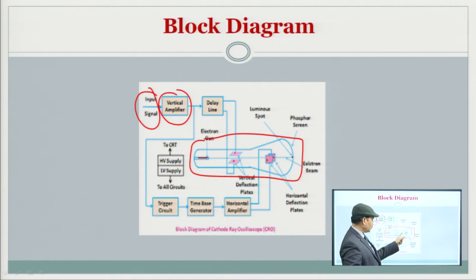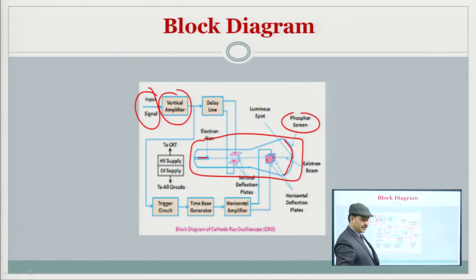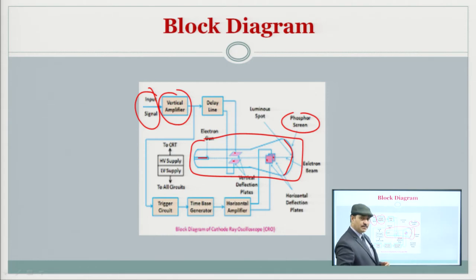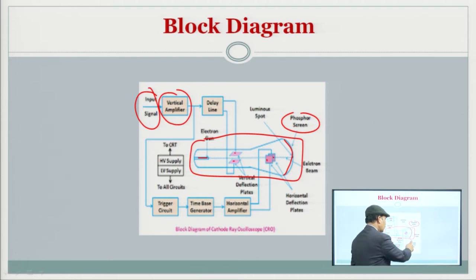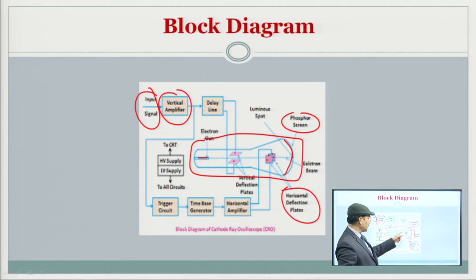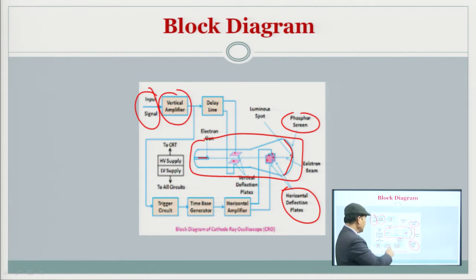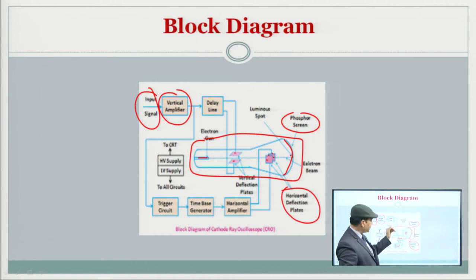This is a phosphorous screen. It can be given a certain velocity, and you can also provide acceleration to the electrons. These are the horizontal deflection plates, which basically control the path of the electron guns. The two principal components of the CRO are the vertical deflection plate and the horizontal deflection plates.